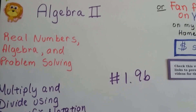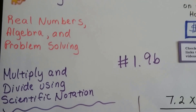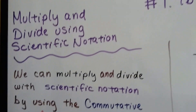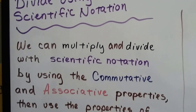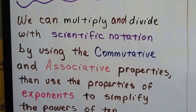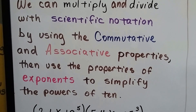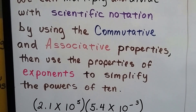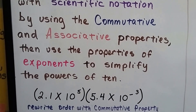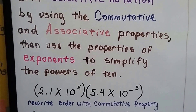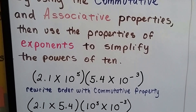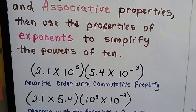Algebra 2, 1.9b: multiply and divide using scientific notation. We can multiply and divide with scientific notation by using the commutative and associative properties and then using the properties of exponents to simplify the powers of 10.